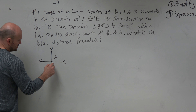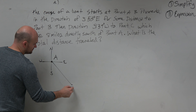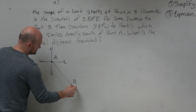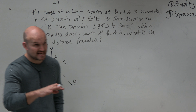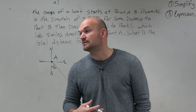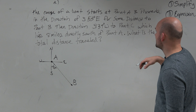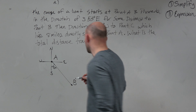To do this problem, the first thing we've got to do — it says the course starts at point A. So I'm going to write A. And then it proceeds in a direction. I have a bearing, right? So remember what I said when you have a bearing — whenever you have a bearing, you want to create your cardinal directions.